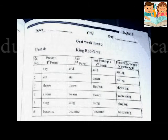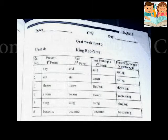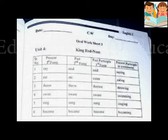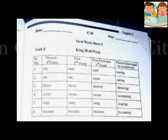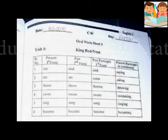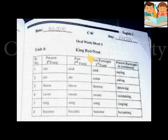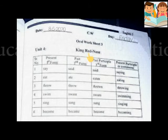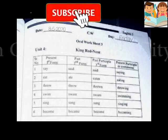Now we will learn oral worksheet number 3 on page number 21. Mention the date and day. Here is a verb sheet of unit 4, King Red Nose. You have to remember the three forms of the verb, and one form is the present participle — the present form with -ing.